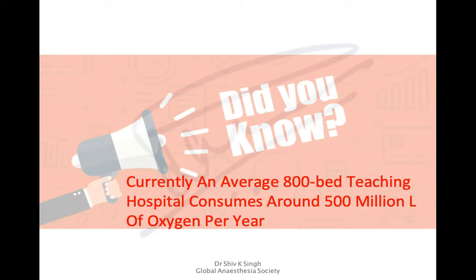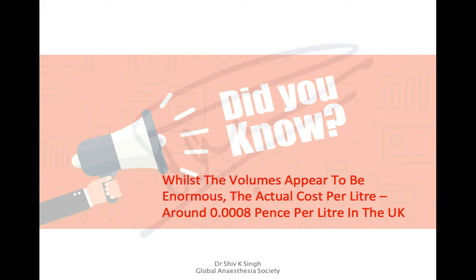An average 800-bed teaching hospital consumes around 500 million liters of oxygen per year. Using a VIE, the cost per liter is around 0.0008 pence per liter in the UK — making oxygen relatively inexpensive despite the large volumes consumed.